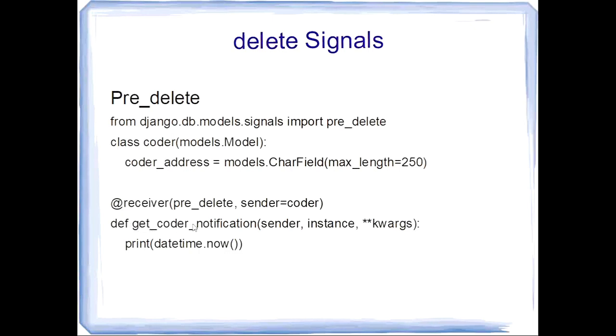We call the decorator having two parameters pre_delete and sender is coder. Before the instance is removed, we print the date and time before that instance is deleted. Similarly for post-delete.